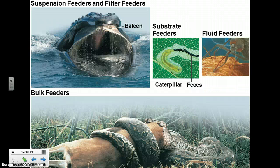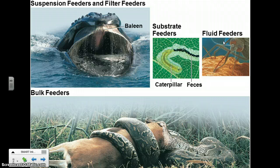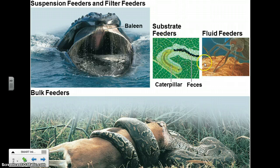Ingestion can occur by several mechanisms. You can be a bulk feeder where you eat the whole organism or large chunks of it — sometimes chewing, sometimes not. We're basically bulk feeders and we chew our food, whereas a python will just swallow a deer whole. Fluid feeders like mosquitoes or leeches consume body fluids of other organisms. Suspension or filter feeders are found in water and use structures like baleen — which baleen whales use to filter krill. Substrate feeders like a caterpillar basically eat their way through their food.